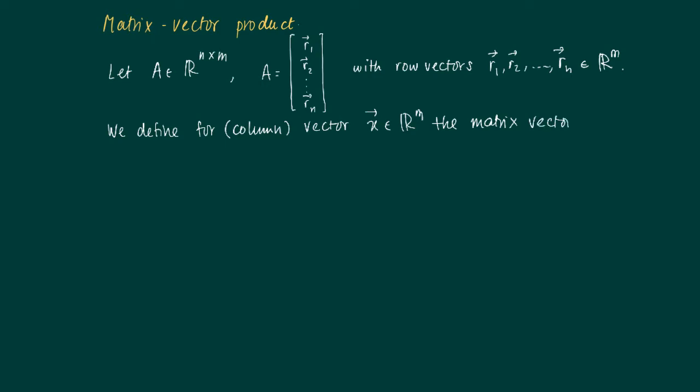We define the matrix vector product of A times x as the column vector in Rn by A x equals.